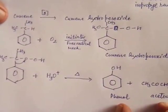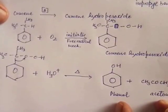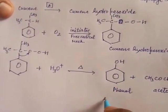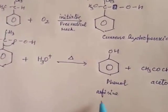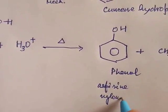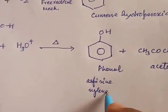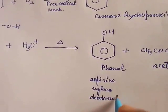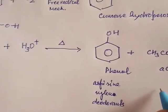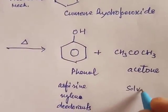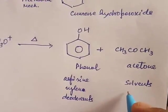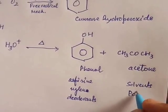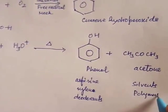Phenol and acetone are very useful industrial products. Phenol is used in the manufacture of aspirin, nylon, billiard balls, and deodorants. Acetone is used as a solvent in industries, as a nail polish remover, and in the production of polymers like plastics.